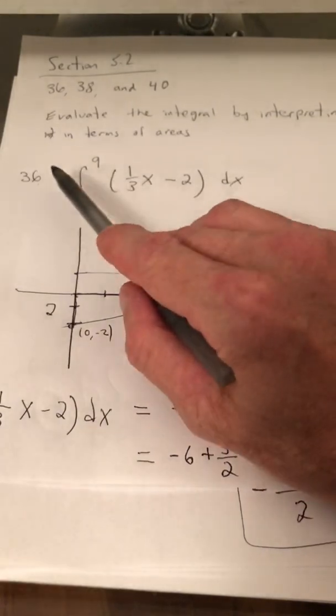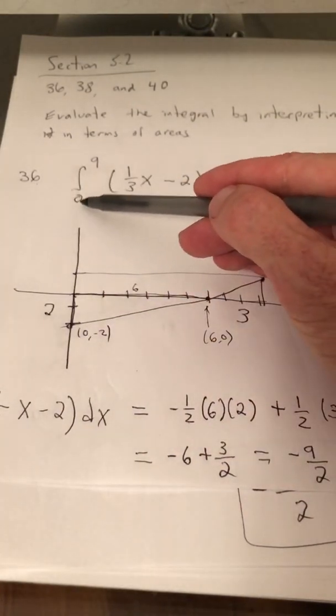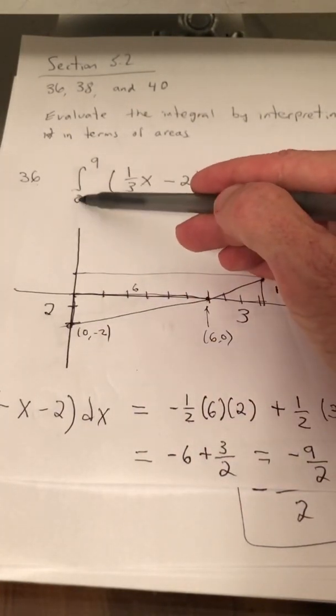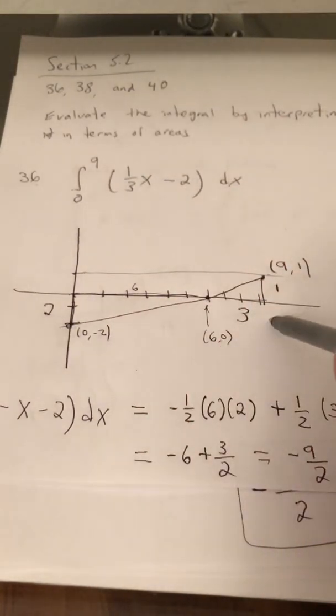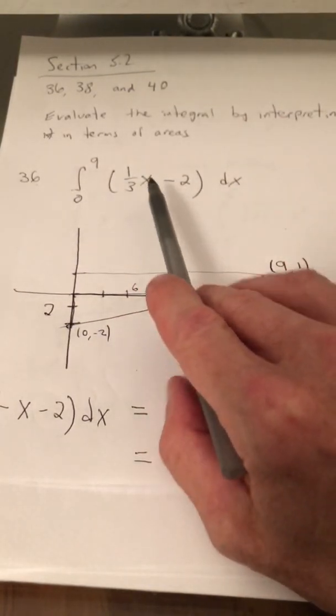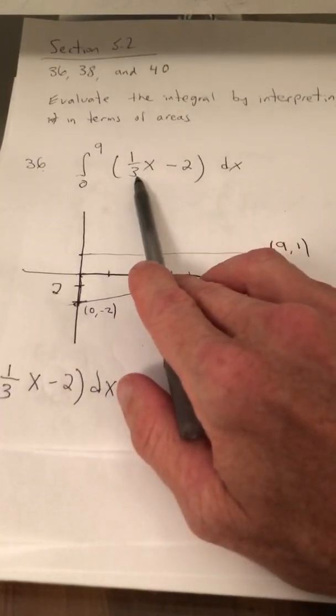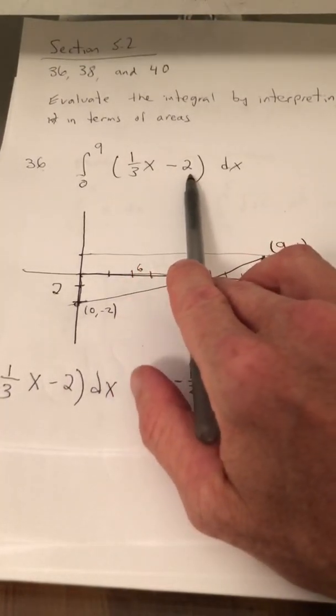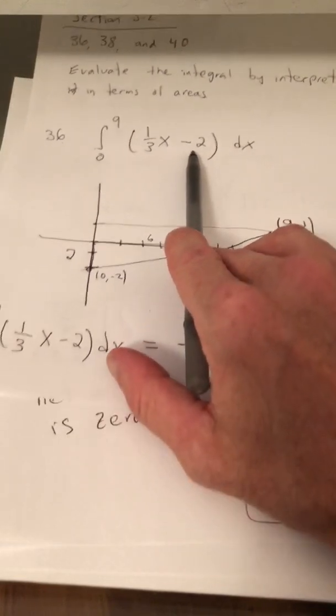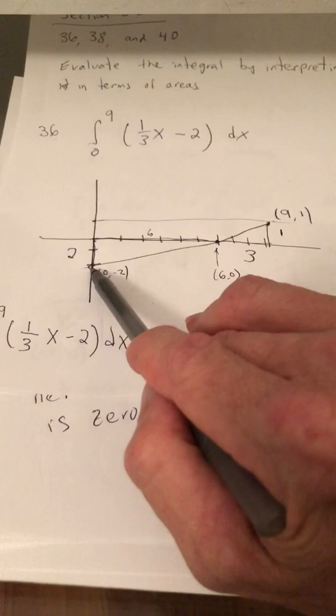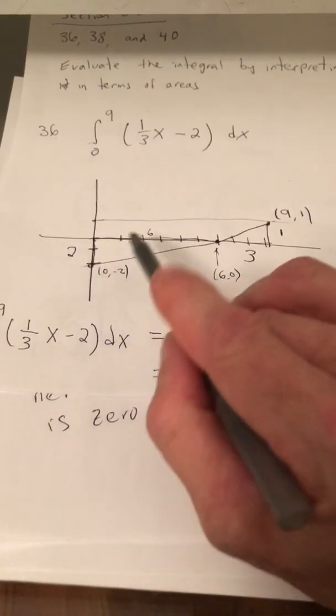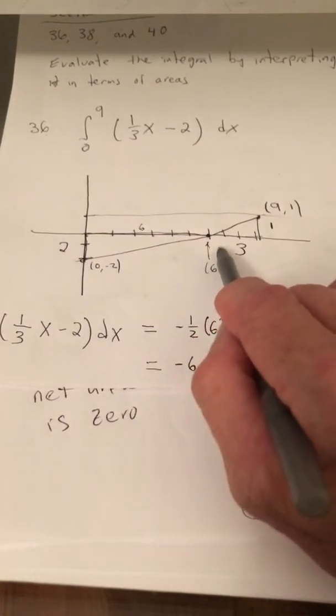So for number 36, we have the integral from 0 to 9, these are your limits of integration, so x is going from 0 to 9. And the function that we're asked to integrate is y equals 1/3x minus 2, so that's a line with the y-intercept of 0, negative 2, an x-intercept of 6, 0.